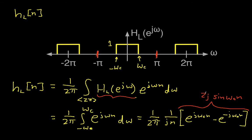So the 2 j will have the j cancel and the 2s cancel. So I get then that this is 1 over pi n sin omega c n.